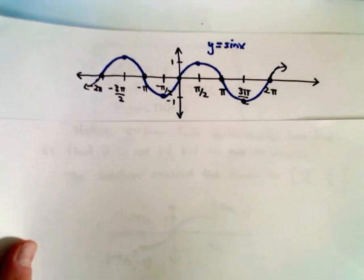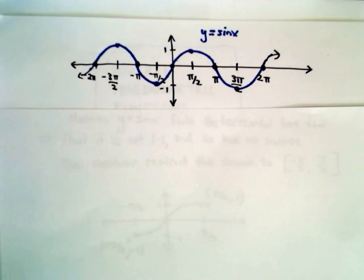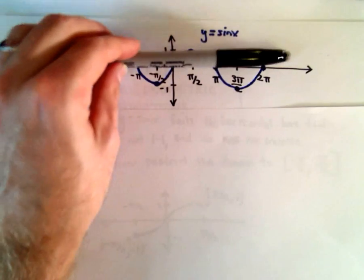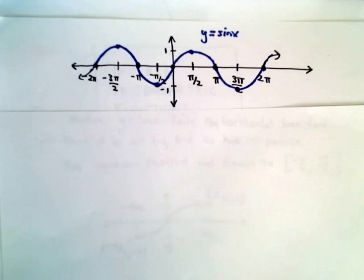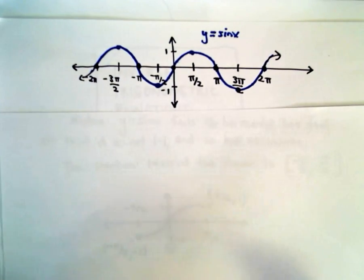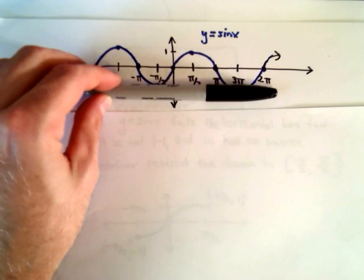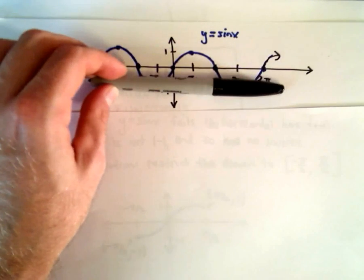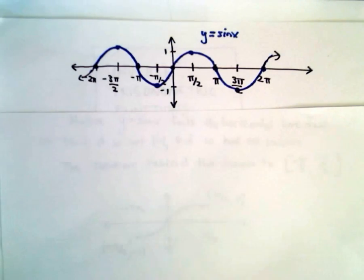So, to start off with, let's just look at y equals sine x. Recall for a function to have an inverse, it has to be one to one. And what that means in terms of a graph is, it passes the horizontal line test. And what that says is, wherever you decide to put a horizontal line, it can hit the graph in at most one place. If not, it's not one to one, which means it doesn't have an inverse.